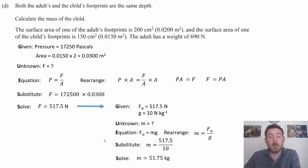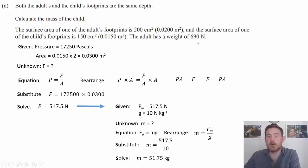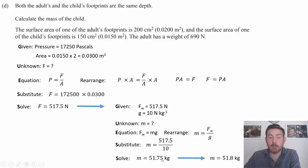You're not marked down for significant figures at level one, but to develop good habits: looking at the data in the question, arguably three significant figures were given, so I round to 51.8 kilograms. The five after the seven indicates rounding up — we round up on five, six, seven, eight, or nine. There's a lot to that question, which is why it's an excellence level response for the full and complete answer.